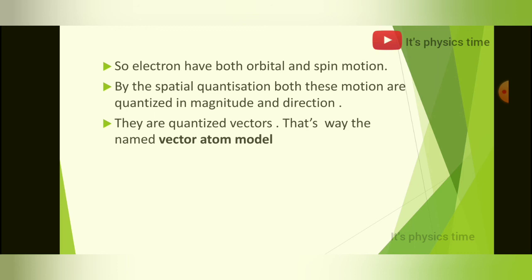In conclusion, the electron has both orbital and spin motion. By spatial quantization, both the orbital and spin motion are quantized in magnitude and direction, so they are called quantized vectors. Since both motions are quantized in magnitude and direction — which is what we use vectors to describe — that is why this model is named the vector atom model.